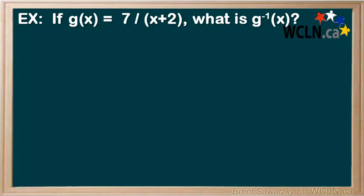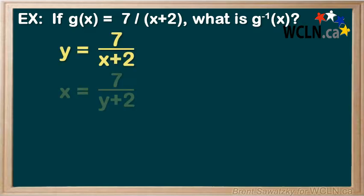If g in terms of x is 7 over x plus 2, then what is the inverse of this function g? Well, let's start by replacing the g in terms of x with y, and then we'll switch the x and y variables around. And this is the inverse.